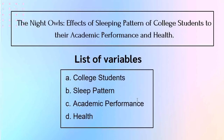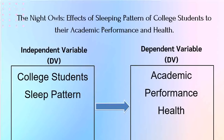Ang problema na lang natin ngayon, since alam na natin ang variable sa ating given example, which of these variables are under independent variable and dependent variable? Malalaman natin yan kung titignan natin yung ating next slide. Kapag sinabi natin independent, ito yung pag-aaralan natin, ito yung imamanipulate natin. Ibig sabihin, sa ating example, ang imamanipulate natin o iimbestigahan natin ay yung college students at yung sleep pattern nila. Kaya sila yung ilalagay natin sa independent variable.